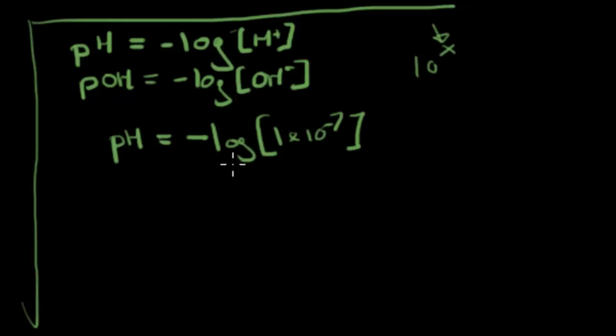So the log takes this number, and instead I get negative negative 7, because the log of 1 times 10 to the negative 7th is just negative 7. It's taking this exponent out of the power of 10. Then we can evaluate this. A negative negative is simply a positive, so we get pH is equal to positive 7. And that's how they're connected.